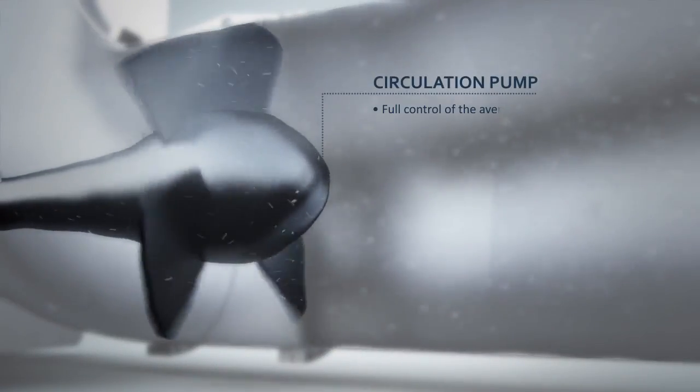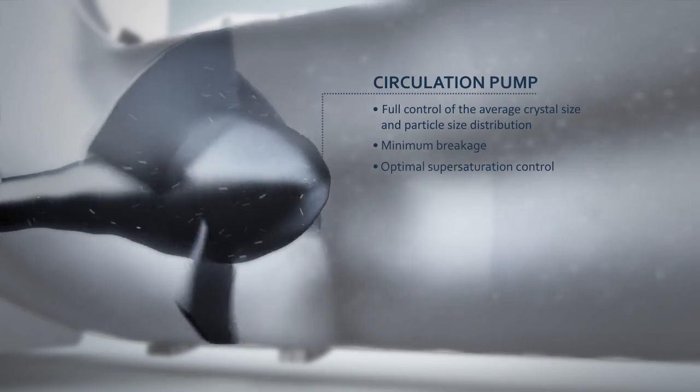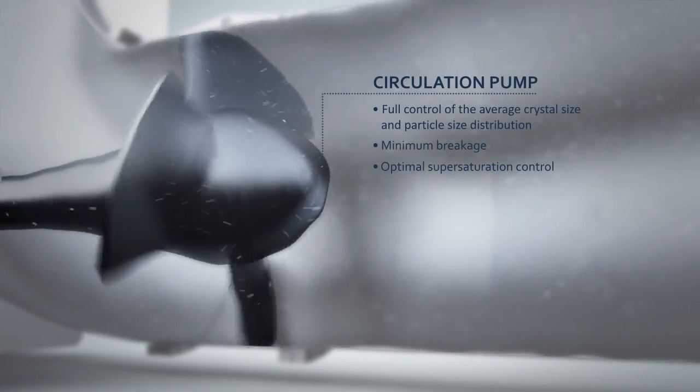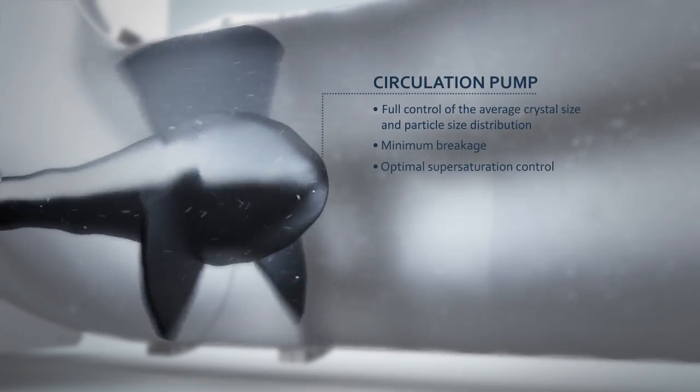The rotation speed of the GIA circulation pump is designed to control the particle size and particle size distribution of the produced crystal mass.